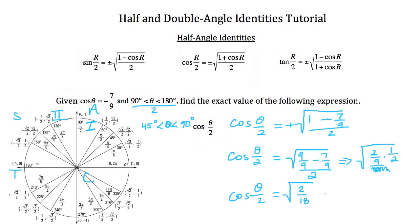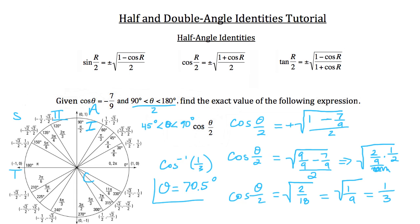The square root of 2 over 18 reduces to the square root of 1 over 9. Taking the square root of both: the square root of 1 is 1, and the square root of 9 is 3, so the cosine of theta over 2 equals 1/3. Taking the inverse cosine of 1/3, we find theta has a value of approximately 70.5 degrees, which falls between 45 and 90 degrees as expected.